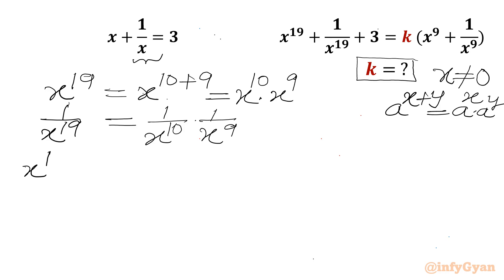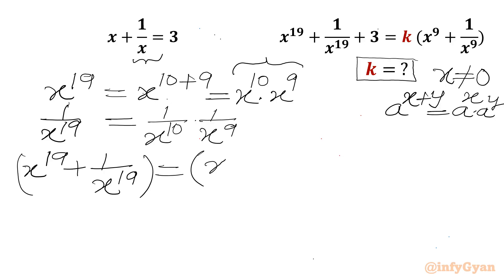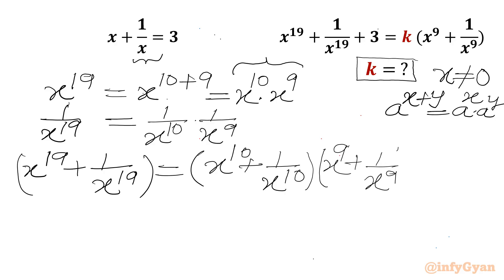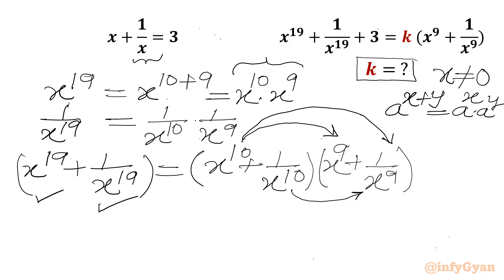The clue is very simple. We have to write x power 19 plus 1 over x power 19 in product form. So I can write it as (x power 10 plus 1 over x power 10) times (x power 9 plus 1 over x power 9). Multiplying term by term: x power 10 times x power 9 gives x power 19, and 1 over x power 10 times 1 over x power 9 gives 1 over x power 19. Now the cross product: x power 10 times 1 over x power 9 gives us x.